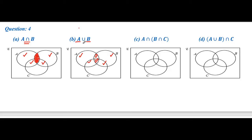Now we have discussed: if it is union, then we have to shade both single tick and double tick. So this is the desired region — we shade both the double tick and single tick regions. This is the desired shaded region.